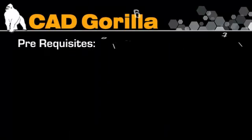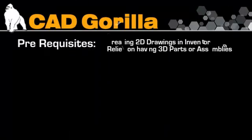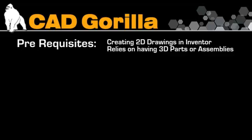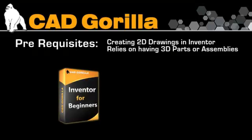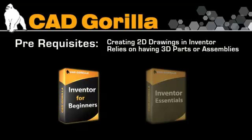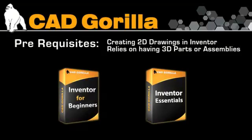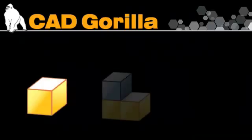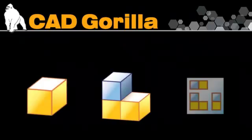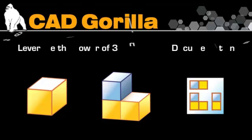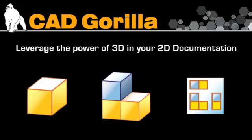As for prerequisites, since creating 2D drawings in Inventor relies on first having a completed 3D part or assembly, we highly recommend going through either our Inventor for Beginners or Inventor Essentials course. If you know how to create 3D parts and assemblies, we'll show you how to take advantage of the power of 3D to leverage in your 2D documentation.